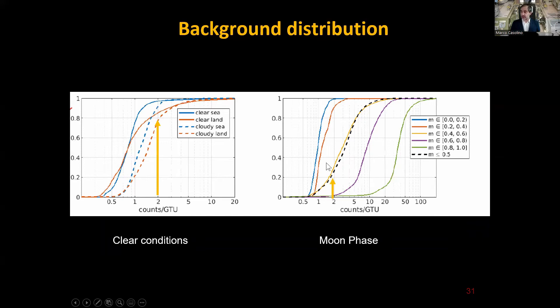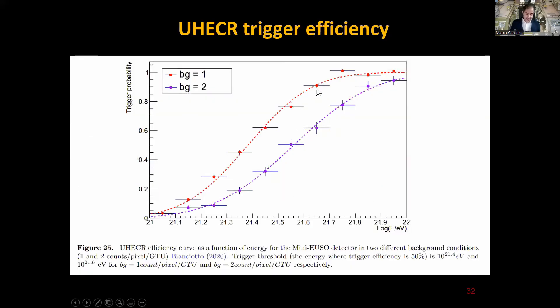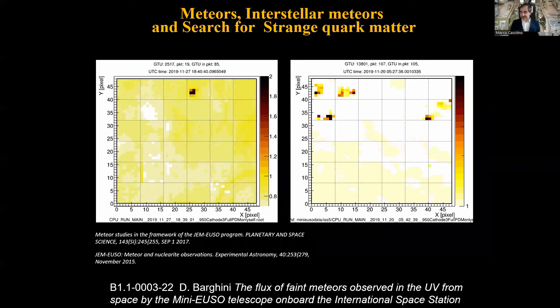Even if there is the moon, even with 50% moon you have 20% efficiency. If the moon is up to 40%, you still have very high efficiency in absence of clouds of 90%, which is very reassuring. This translates in terms of ultra-energy cosmic ray efficiency. These are simulations done by the thesis of Marta Bianciotto. If there is an average background of 1 photo count per GTU or 2 photo counts, this is the threshold. You basically go from 10^21.4 to 10^21.6. Of course there are no events but we will put an upper limit with this, although there are a few strange things we are investigating.